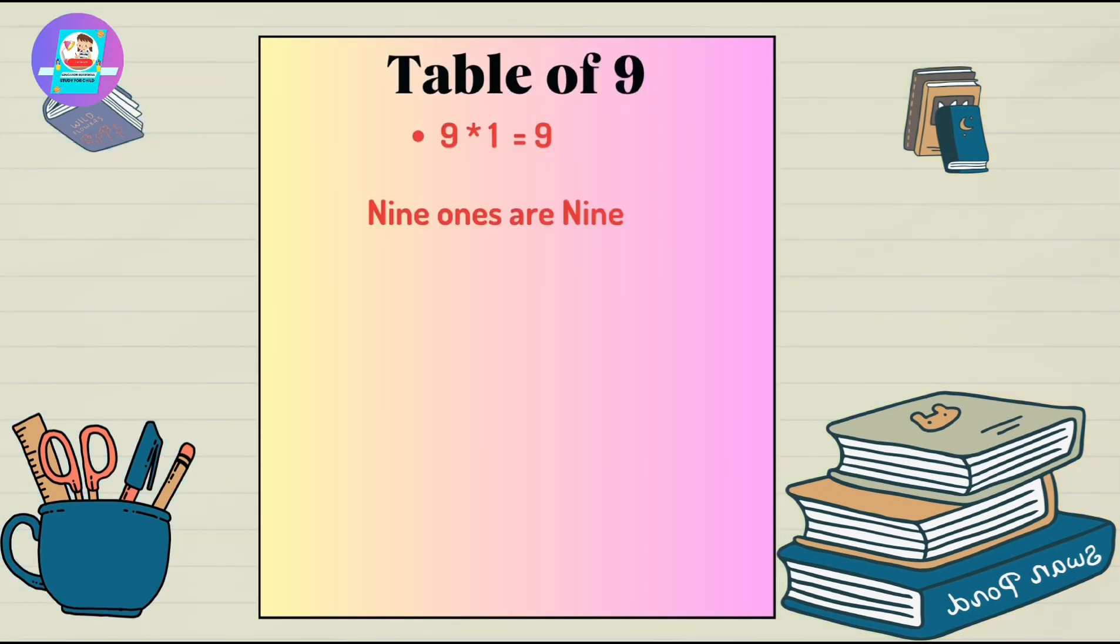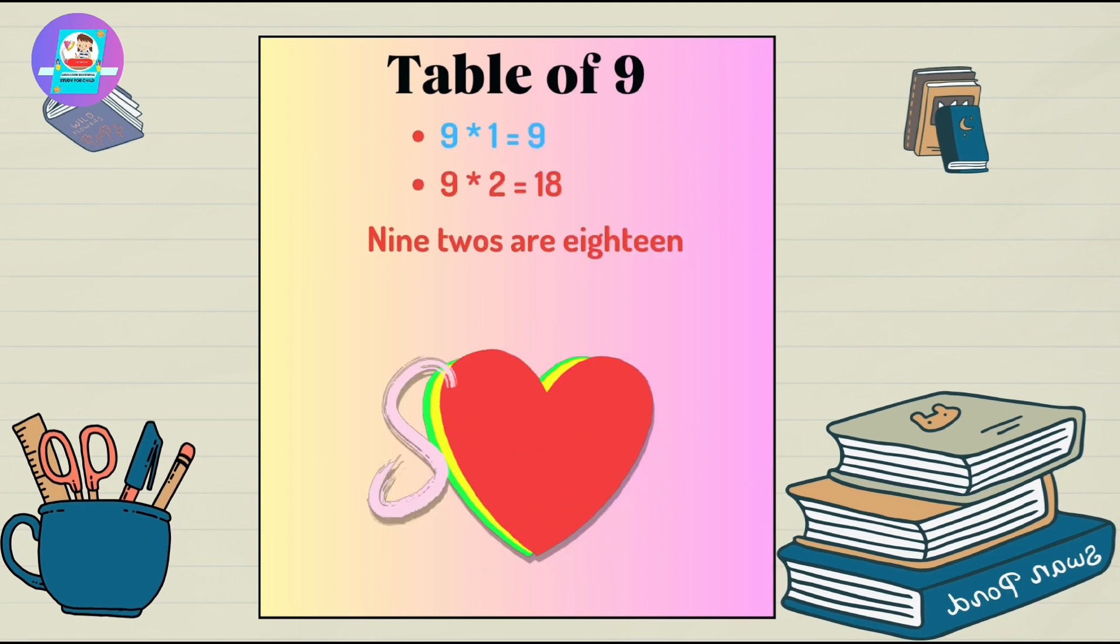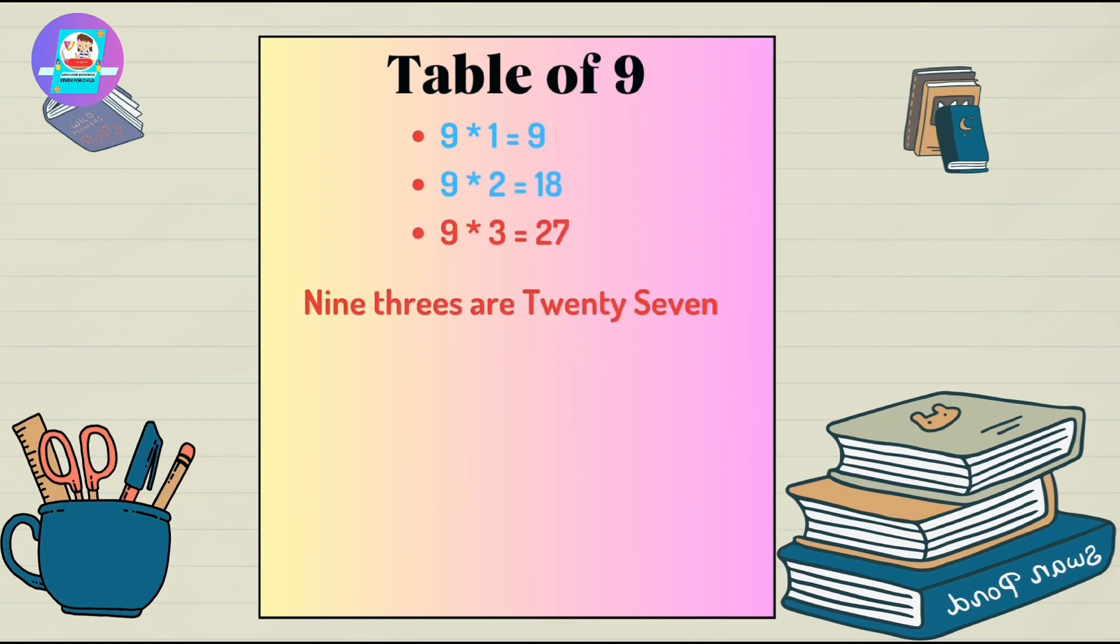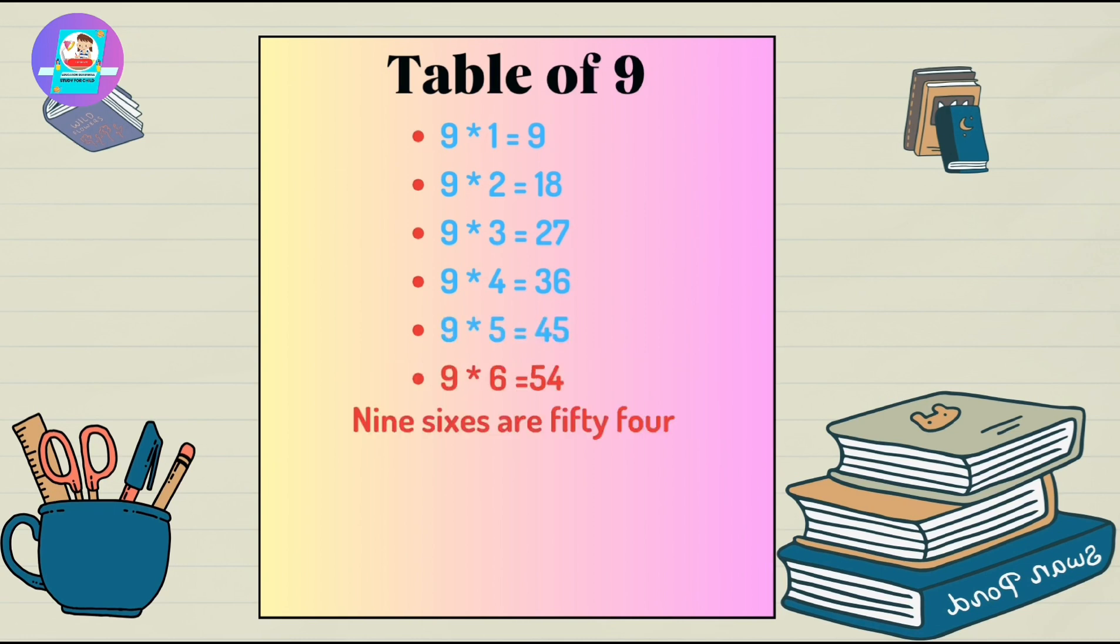Now we will learn table of 9. 9 1's are 9. 9 2's are 18. 9 3's are 27. 9 4's are 36. 9 5's are 45. 9 6's are 54.